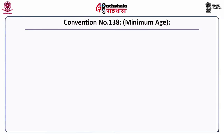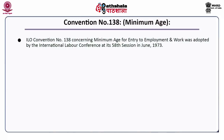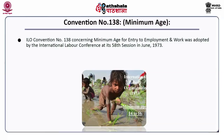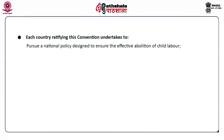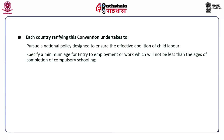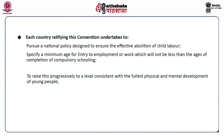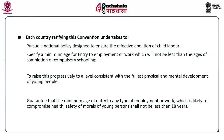ILO Convention No. 138 concerning minimum age for entry to employment and work was adopted by the International Labour Conference at its 58th session in June 1973. This is one of the eight core conventions of the ILO. Each country ratifying this convention undertakes to pursue a national policy designed to ensure the effective abolition of child labour, specify a minimum age for entry to employment or work which will not be less than the age of completion of compulsory schooling, and raise this progressively to a level consistent with the fullest physical and mental development of young people. The minimum age for any employment likely to compromise the health, safety or morals of young persons shall not be less than 18 years.